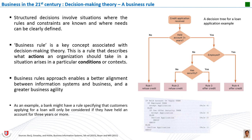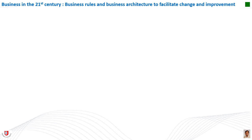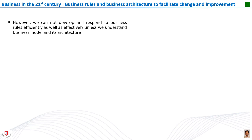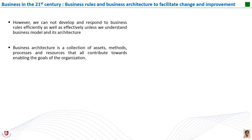These tools also make it easier to implement business rules within computer programs. As an example, a bank might use a business rule that specifies only customers who have held an account for three or more years can be considered for a loan. We cannot develop and respond to business rules efficiently and effectively unless we understand business models and their architecture. Business architecture is a collection of assets, methods, processes, and resources that all contribute towards enabling the goals of the organization.